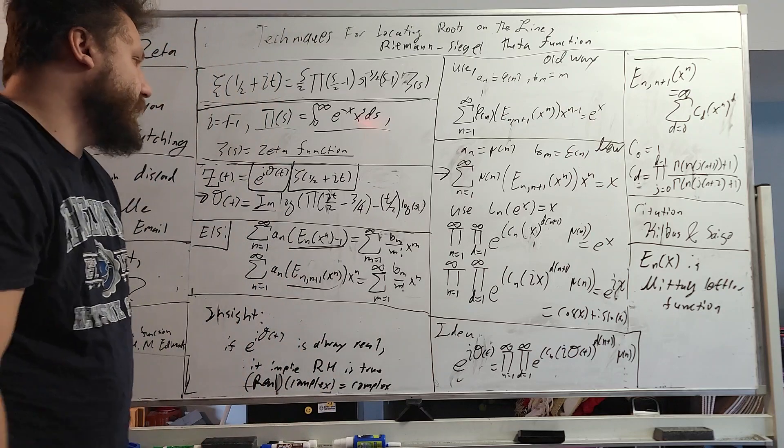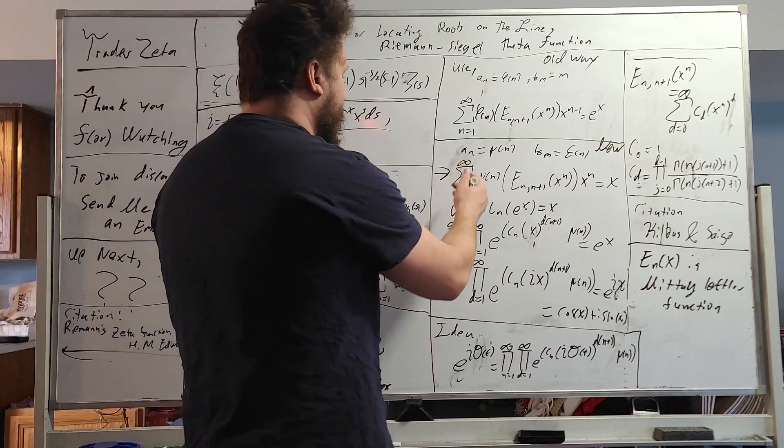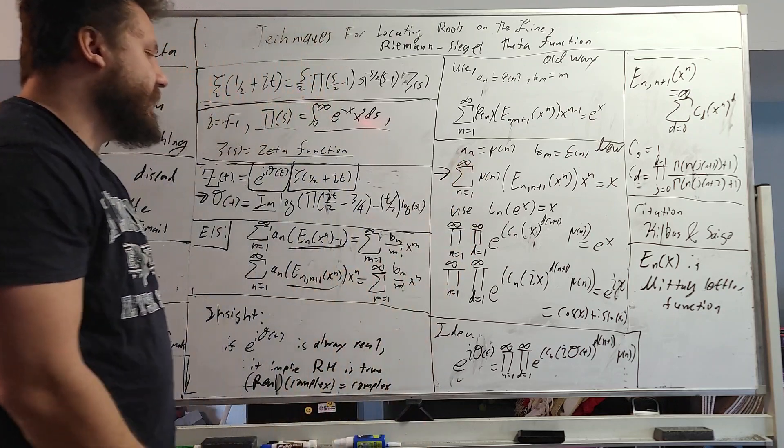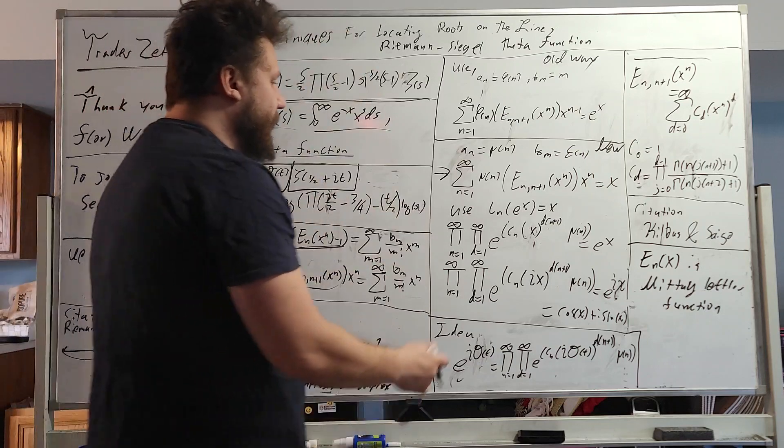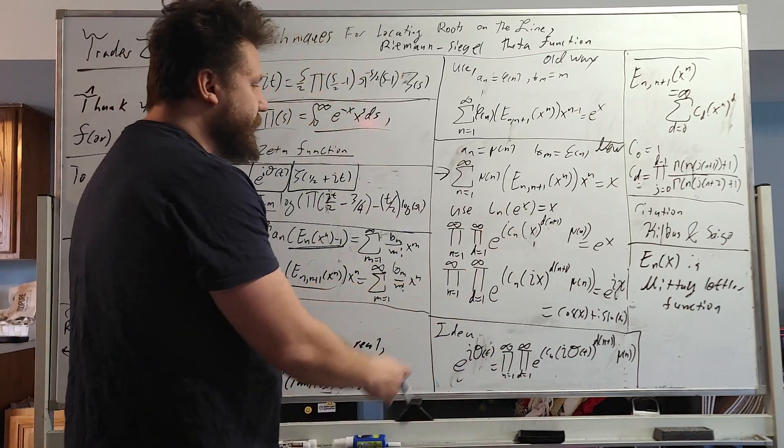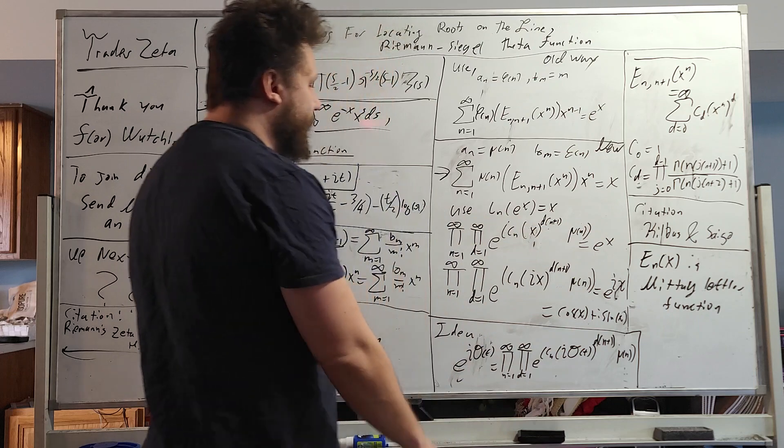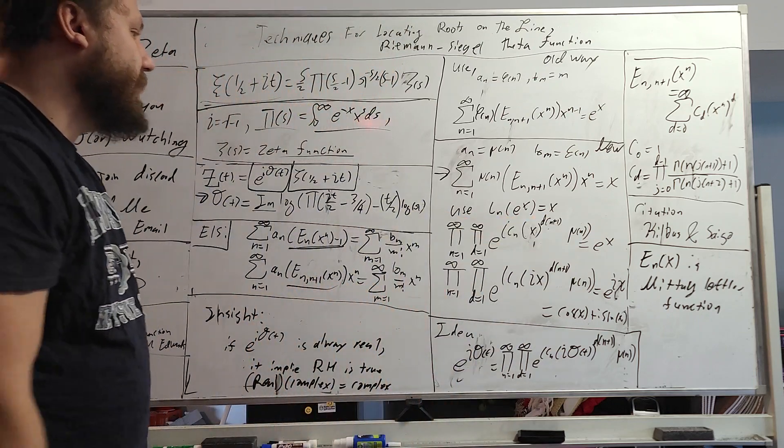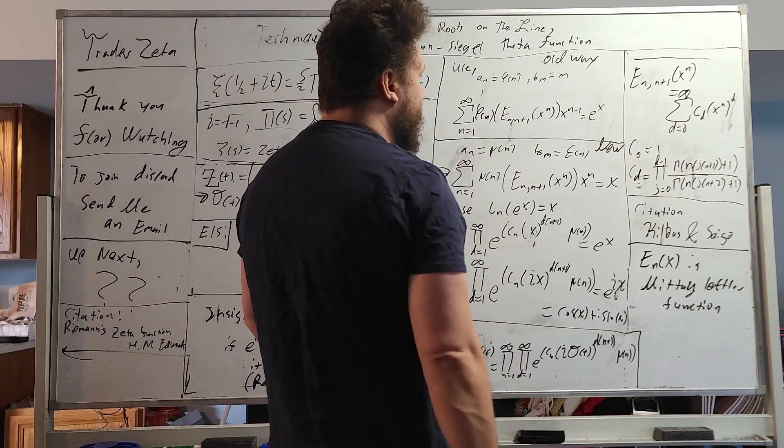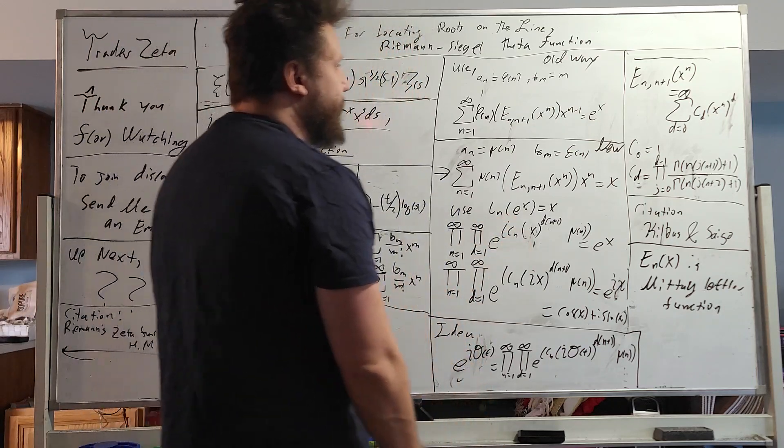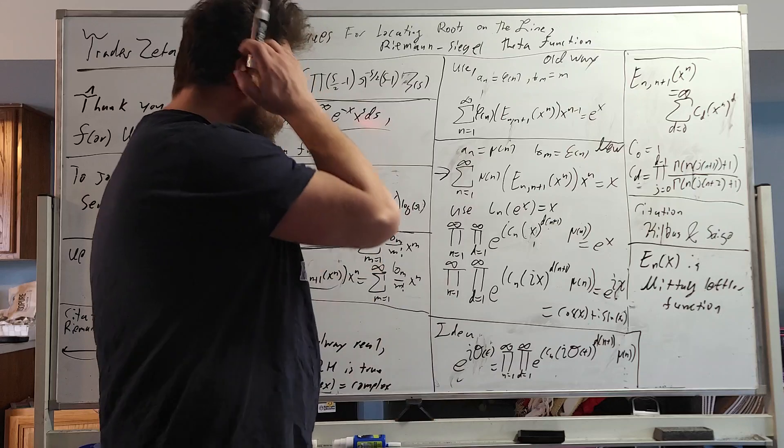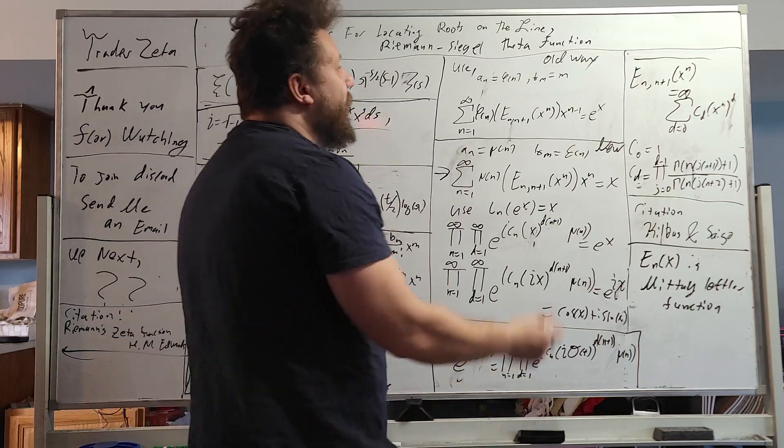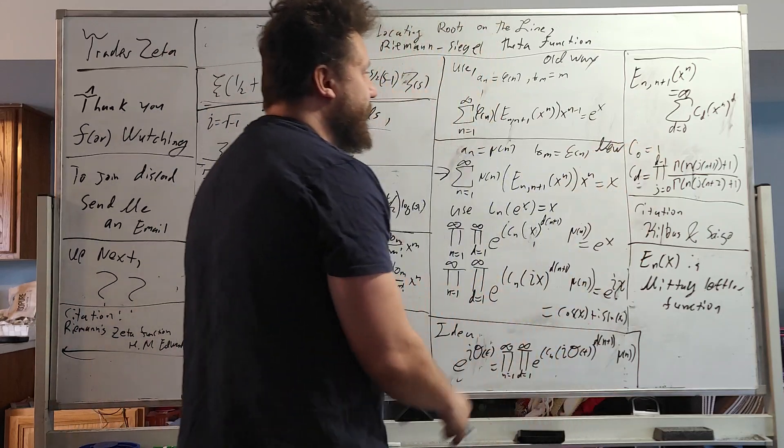And when you do this, it gets pretty interesting. So when you raise a sum to the E, so E to the sum, it becomes kind of a product, and you can go through and get all of these terms like this. Now you might ask, what's the C sub n? So the Mittag-Leffler function has a pure generating function form. I won't go over it here, but this is just the result.